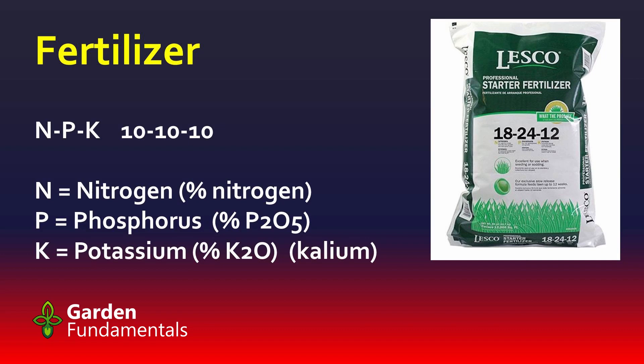In fact, that's not quite correct. The nitrogen is the percent nitrogen, but for both phosphorus and potassium, it's actually the percent of a different chemical. For phosphorus, it's the percent P2O5. That doesn't really make a lot of difference until you try to calculate how much fertilizer you want to add to your garden.